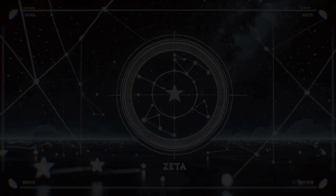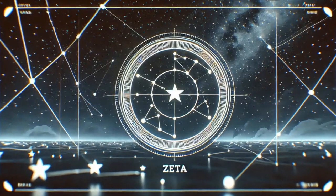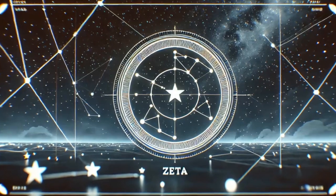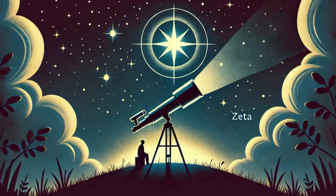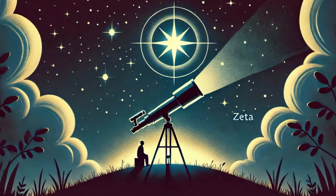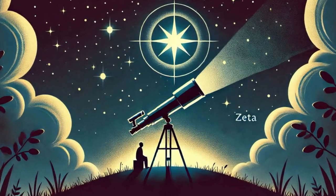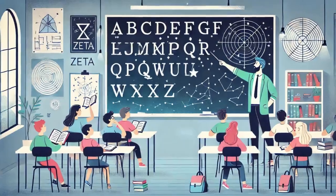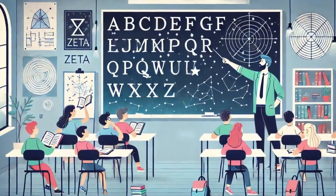Later, as astronomy becomes a popular science, Greek letters are also used to name stars. For example, the sixth brightest star in the Orion constellation is called Zeta Orionis. Astronomers use this system even today.